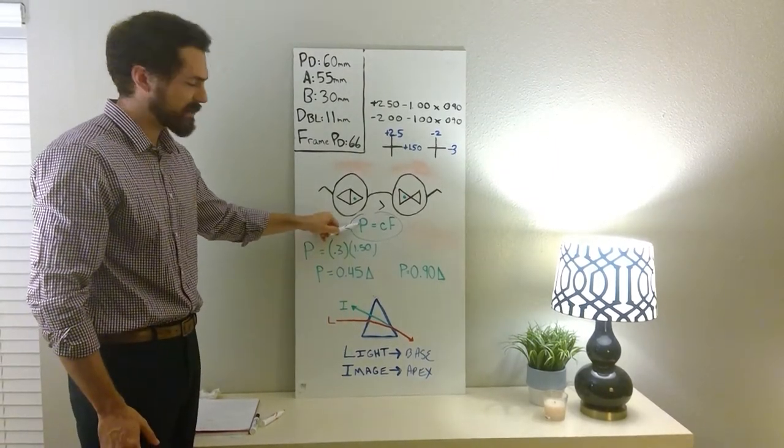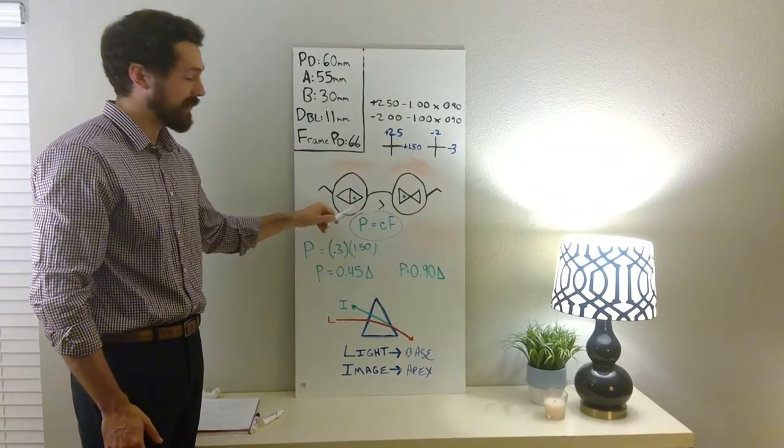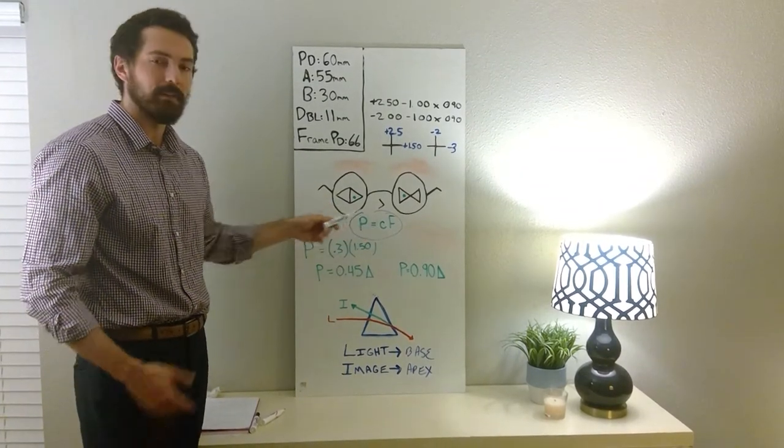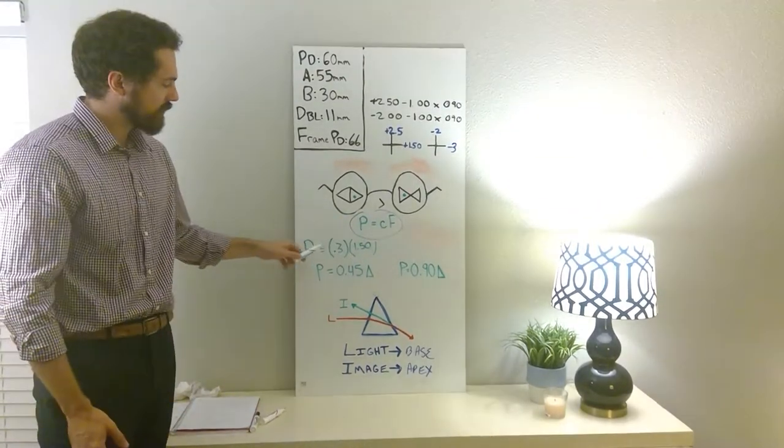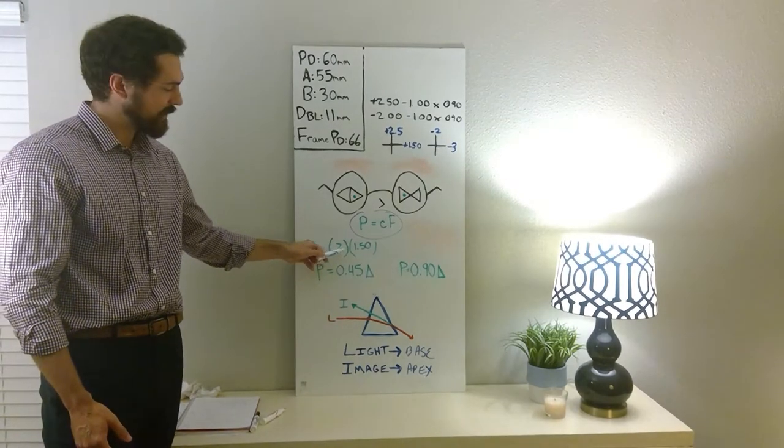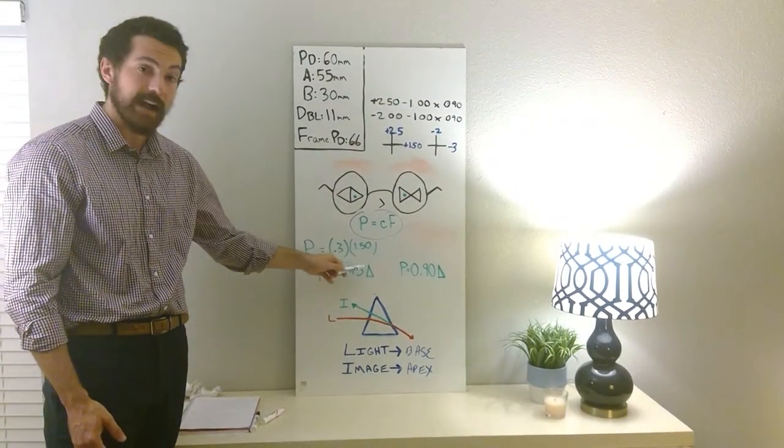So we have P for the amount of induced prism, times C, the distance of displacement from the optical center, in centimeters. I like using C to help me remember that centimeters is the unit, times F, the power of the lens.